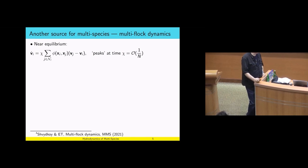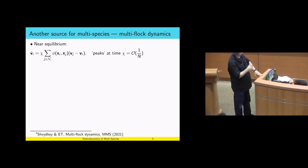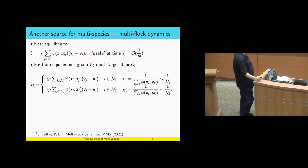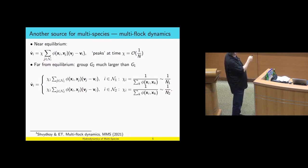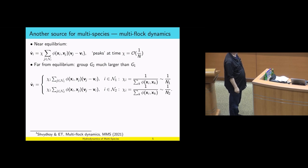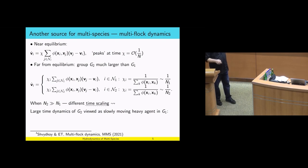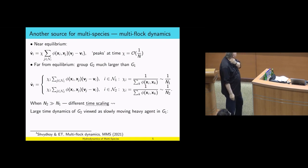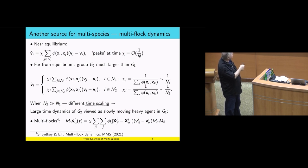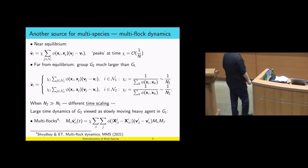Where does the multispecies framework come from? It comes from multiflocking. We start with the agent-based description. These agents peak at early time, and therefore if we have two groups G1 and G2 that are different in size, eventually they come into two different flocks. If you adjust the clocks as I described before, the large-time dynamics of G2 is viewed as a slowly moving heavy agent from the point of view of G1. You start to get a heavy agent and a lighter agent, and at the end you get a multiflock — this is basically everything from the previous lecture but in a more systematic way.